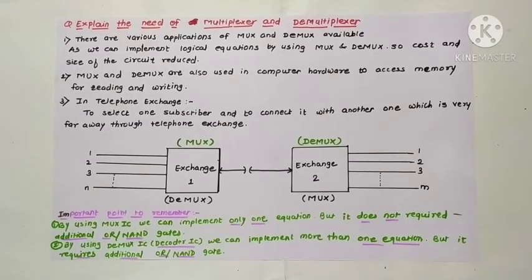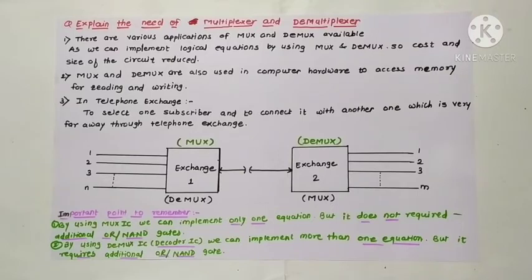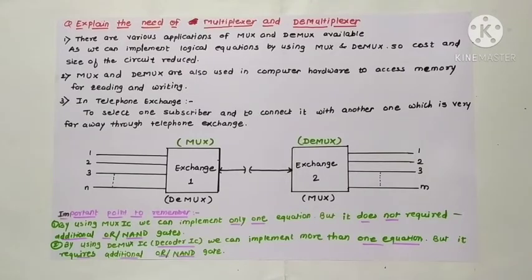Hello students. In the previous lecture we discussed the concept of decoder, IC7447 as a decoder driver, and in combination with the seven segment display — both common anode and common cathode types. In today's lecture we are going to learn about the necessity of multiplexing and demultiplexing, and some problems related to multiplexer and decoder.